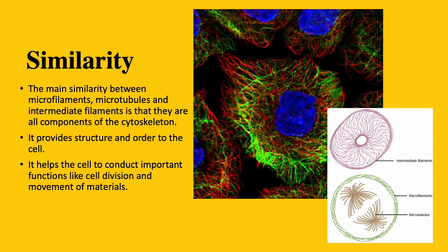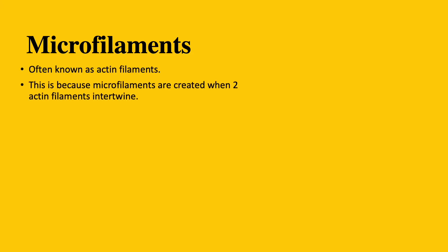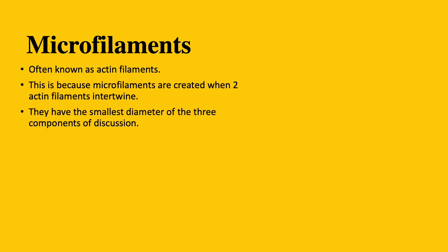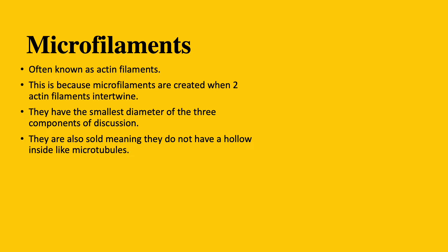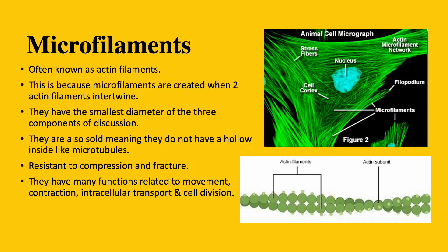Let's start talking about microfilaments. Microfilaments are also called actin filaments. This is because microfilaments are created when two actin filaments intertwine with each other. They have the smallest diameter of the three components we're discussing today. They are also solid polymers, meaning that they do not have a hollow inside, like microtubules, as you will see later on.